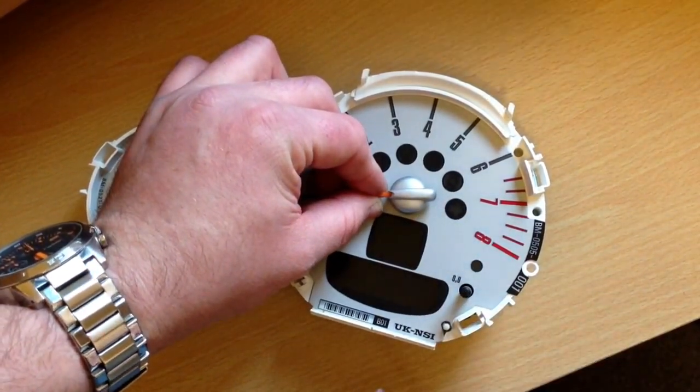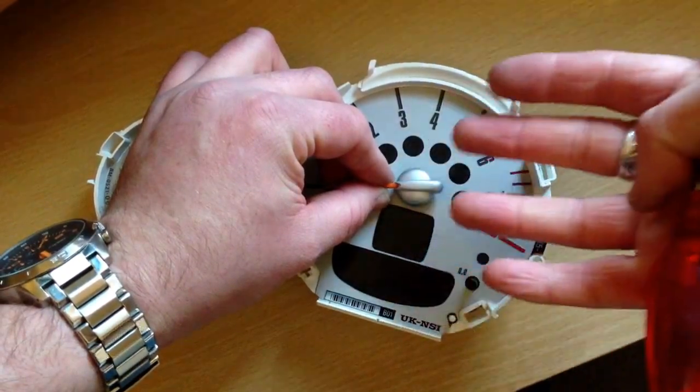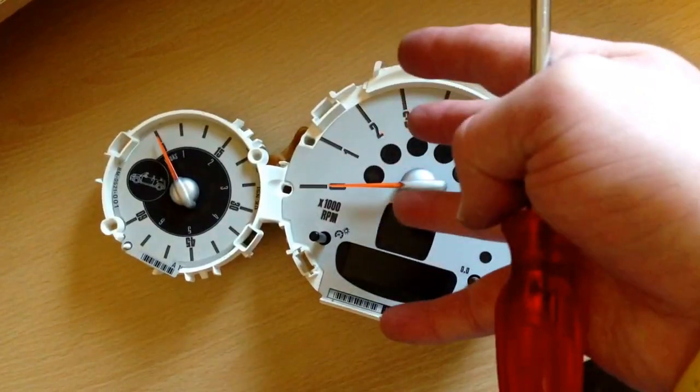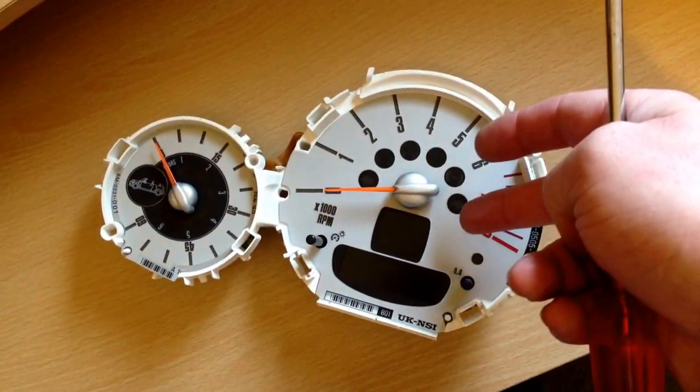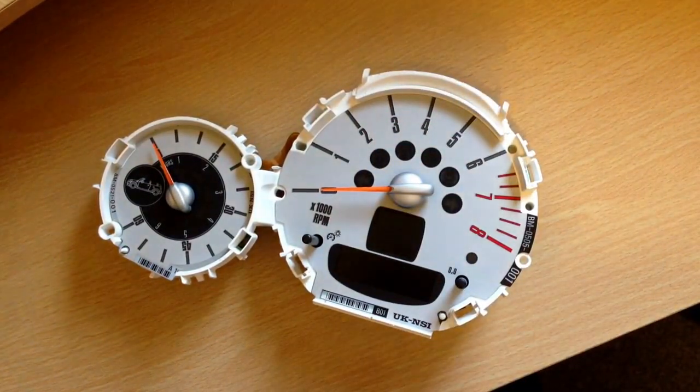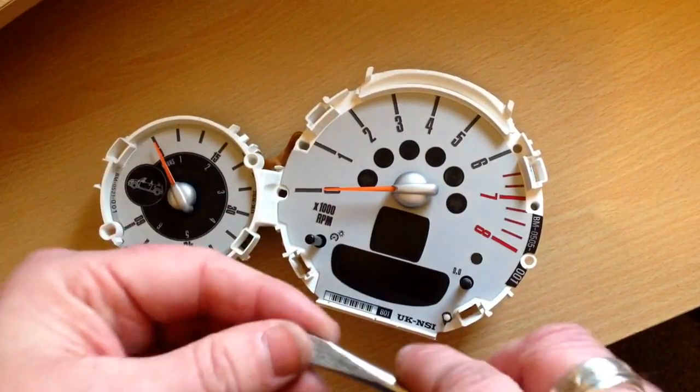Some people use forks to slot in that way. The only thing with that is if it slips and goes forward, it can gouge your face or gouge through the circuit board. The best thing I find is using a flat-bladed screwdriver.